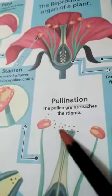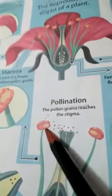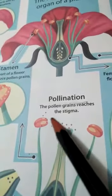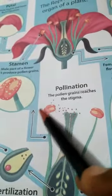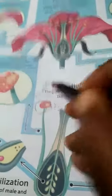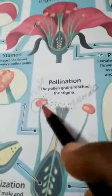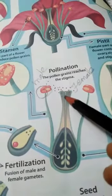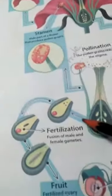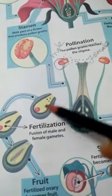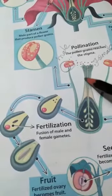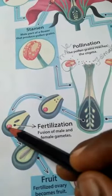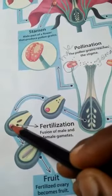When an insect touches the anther, the powdery substance called pollen grains is transferred. These pollen grains then reach the stigma. The stigma is the female part. The pollen grains enter through a tube and travel down through the style into the ovary, where the female gametes are present.